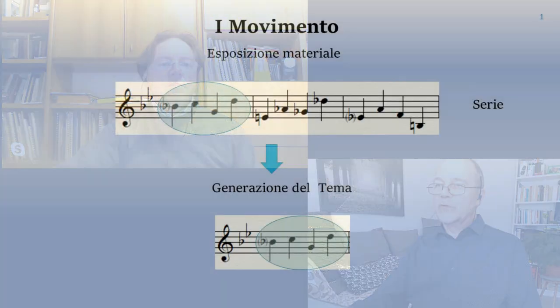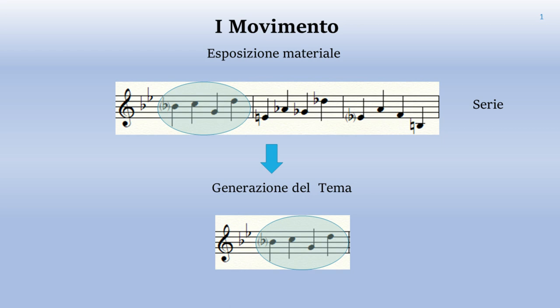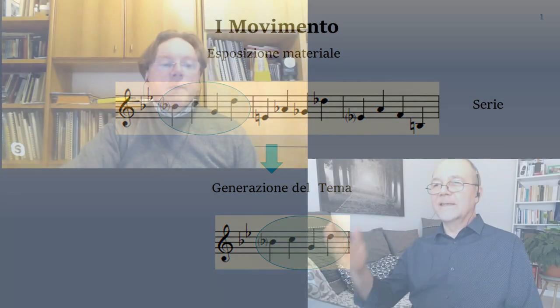Nella prima diapositiva vediamo il materiale compositivo originario, cioè l'embrione da cui si è sviluppato tutto il brano. Angelo, ci puoi spiegare in modo semplice come hai ragionato? Il primo movimento descrive il viaggio a Roma, come abbiamo detto, ed è un elogio allo splendore di questa magica città. Ho cercato del materiale che esprimesse concettualmente alcune sensazioni: interesse, sorpresa, attesa, e contestualmente un materiale strutturato ma anche curioso. Ho pensato quindi a una serie, cioè a una successione di suoni.